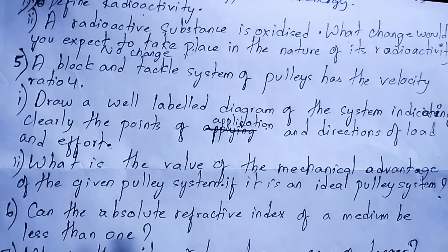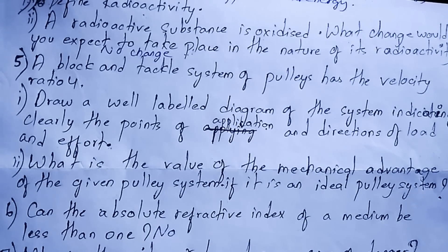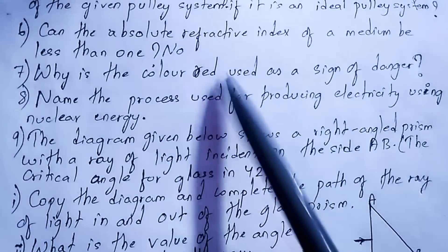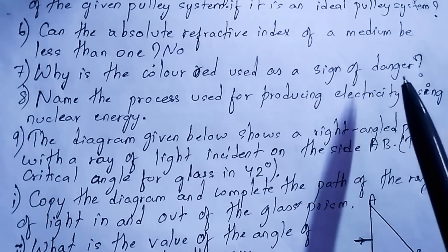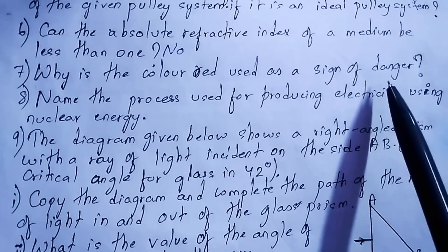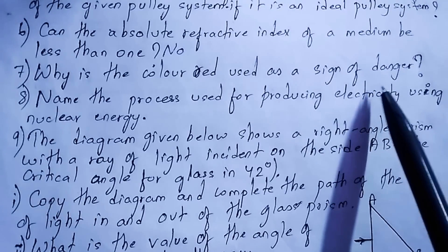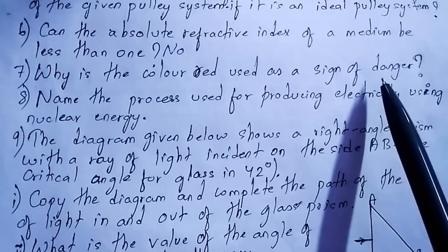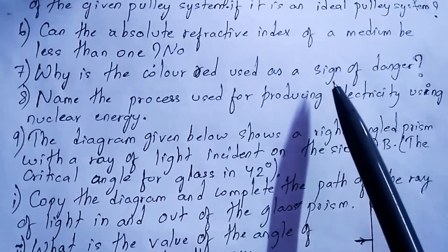Can the absolute refractive index of a medium be less than one? No, it cannot be less than one. Next question: why is the color red used as a sign of danger? Red color is scattered least by air molecules, so it can be seen from a far distance and can even be seen during fog.